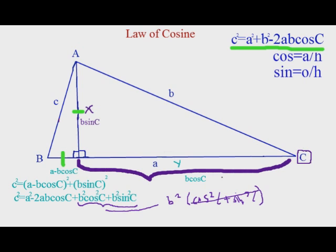This is just equal to 1. So you can say that this is b squared, because b squared times 1 is just b squared.